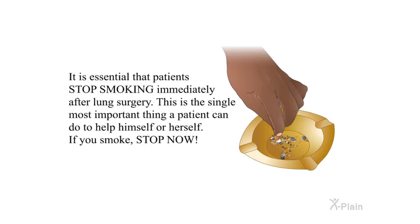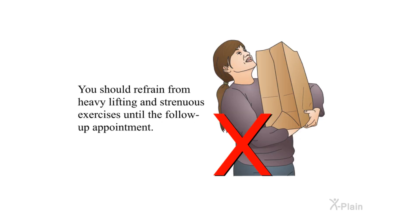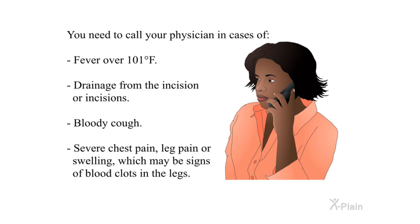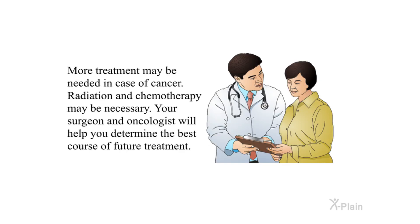It is essential that patients stop smoking immediately after lung surgery — this is the single most important thing a patient can do to help themselves. You should refrain from heavy lifting and strenuous exercises until the follow-up appointment. Call your physician in cases of fever over 101 degrees Fahrenheit, drainage from the incision, bloody cough, severe chest pain, or leg pain or swelling, which may be signs of blood clots. More treatment such as radiation and chemotherapy may be necessary, and your surgeon and oncologist will help you determine the best course of future treatment.